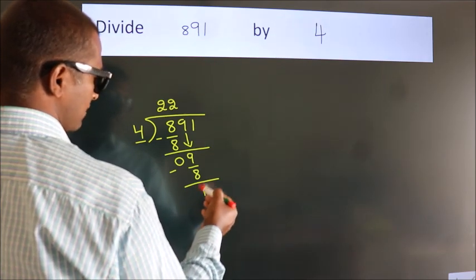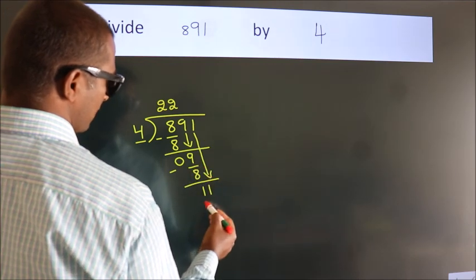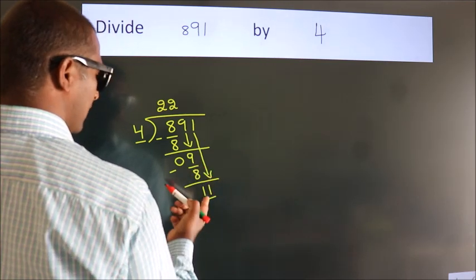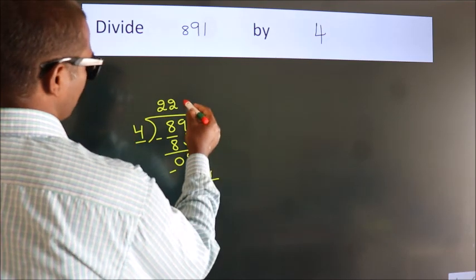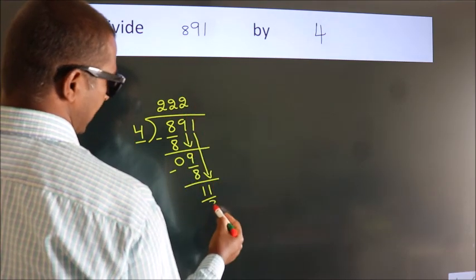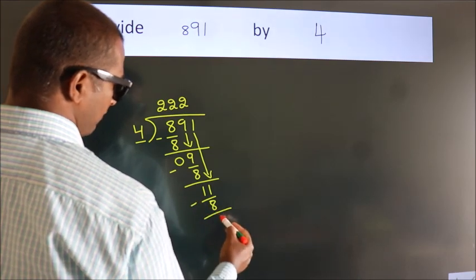After this, bring down the beside number. 1 down, so 11. A number close to 11 in the 4 table is 4 twos, 8. Now, we subtract. We get 3.